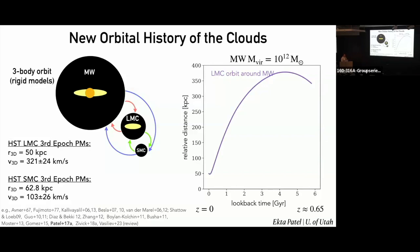Of course, this requires assumptions about what is the mass of the clouds and what's the mass of the Milky Way. Then we look at the distribution of orbital histories that comes out. If you adopt these parameters — and this will vary depending on your Milky Way mass and shape — but in most cases you will get the LMC on first infall, as many of us have already mentioned throughout the last couple of days.